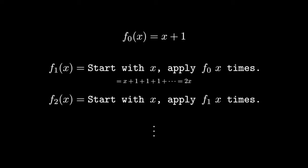We can understand f1 easily. If we take x and add 1 x times, we get 2x. Even f2 is simple. If we start with x and we apply the function 2x x times, we get x times 2 to the x. f3 would be similar to repeated exponentiation, f4 would be repeated f3, and so on. This sequence of functions is called a fast-growing hierarchy.